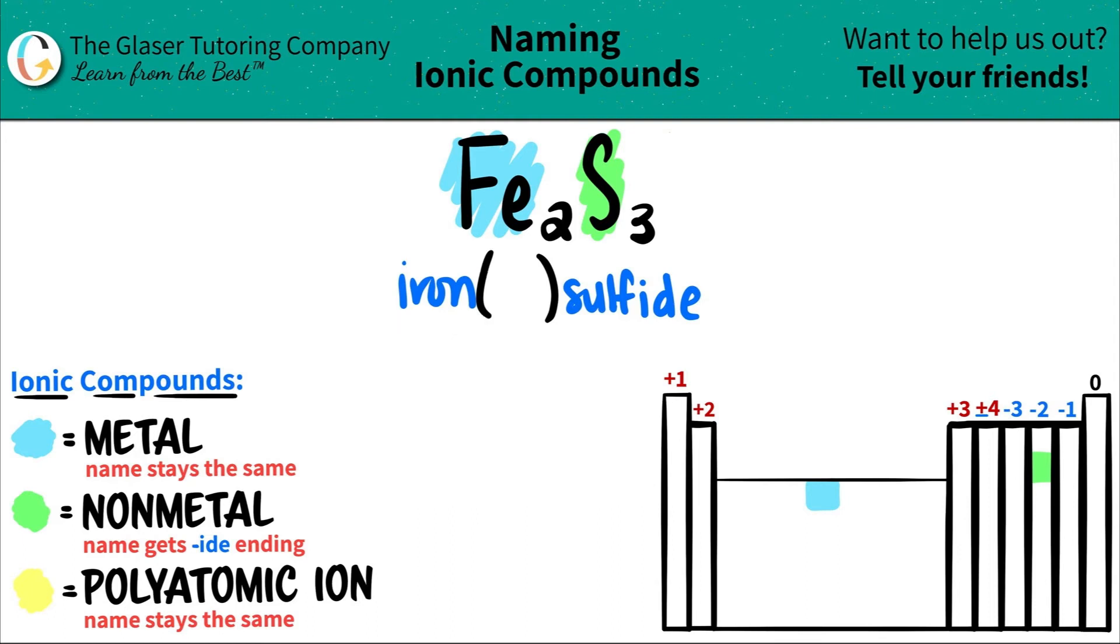Now, the question is, how are we going to get the charge of the metal? It's pretty simple. What we're going to do is we're going to take the subscripts, crisscross them back up, and that's how we get the charges. There were two irons and three sulfurs, so this two crisscrosses up, telling me that the sulfur was a negative two charge, and this three crisscrosses up, telling me that the iron was a plus three.